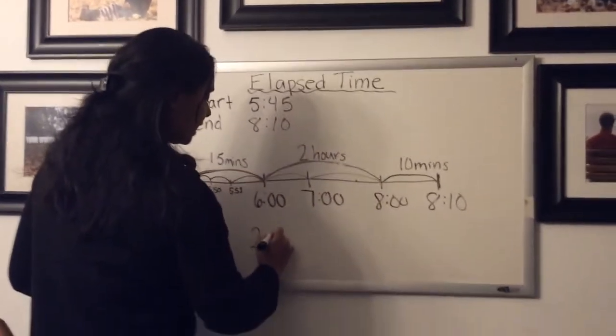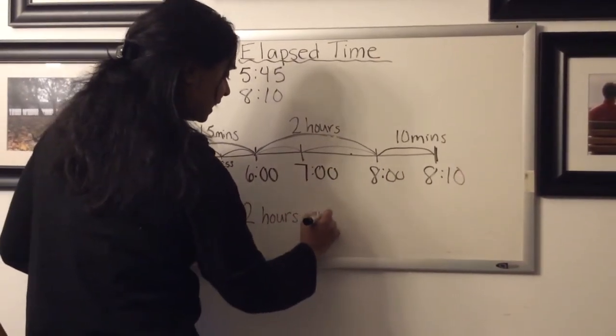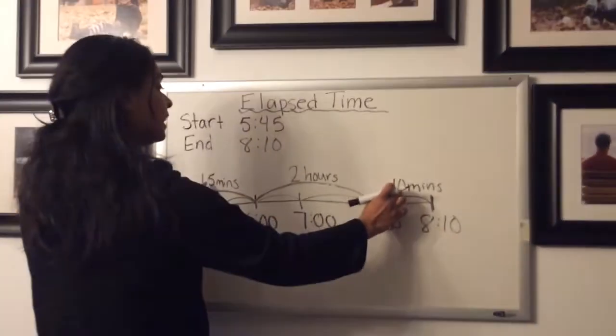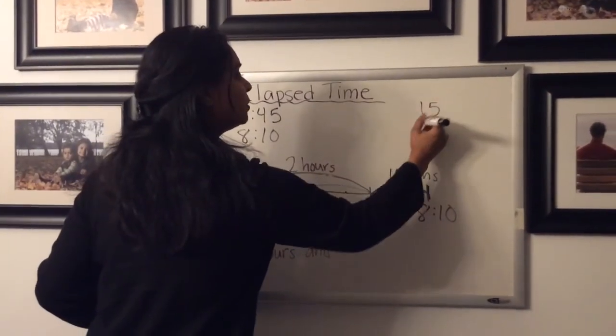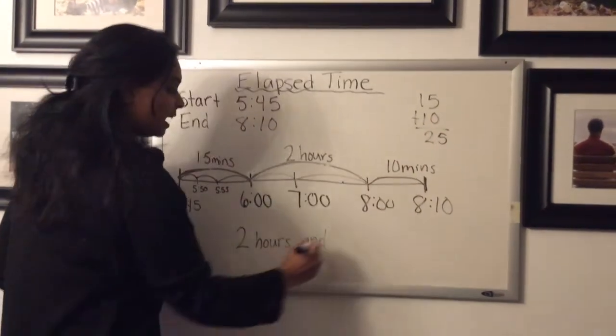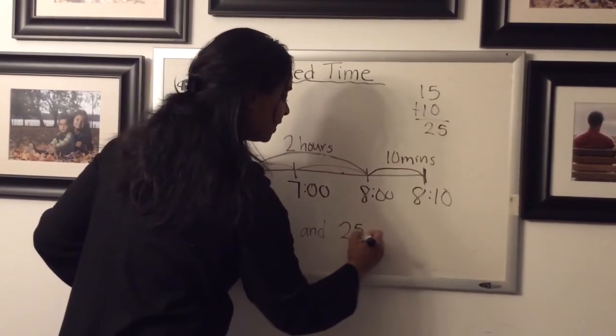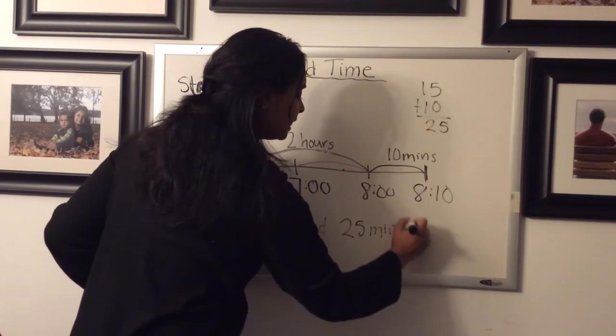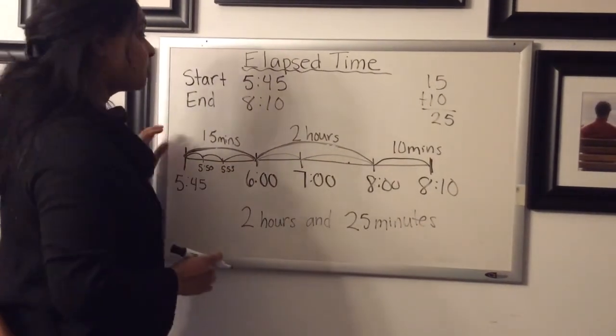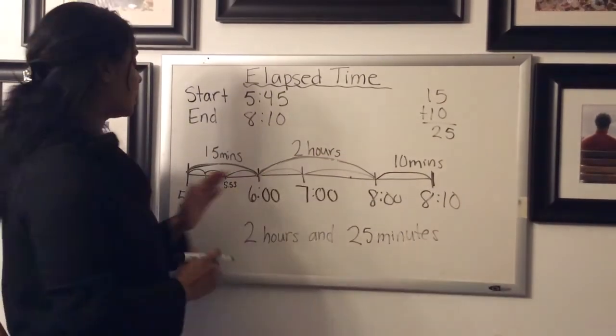So I know that I have two hours and then I put my minutes together. So 15 plus 10, if I'm not sure about that, I would just do a little bit of math on the side here and add that up. And I have two hours and 25 minutes. And that's my elapsed time here, two hours and 25 minutes.